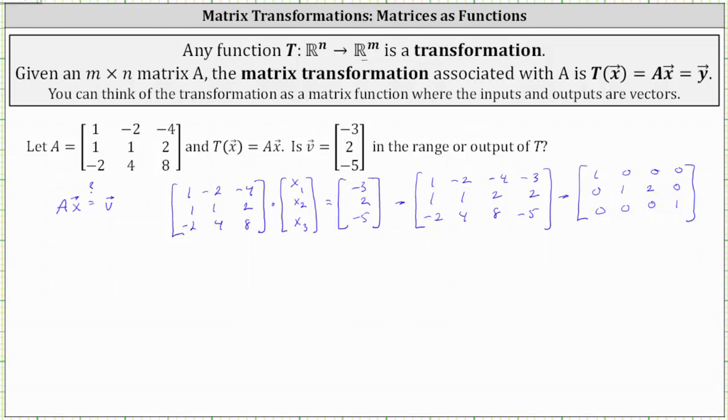Let's go ahead and label the first three columns x sub one through x sub three. Notice we have a problem in row three. Row three indicates that zero equals one, which of course is never true. We have a contradiction, which means there's no solution to the system or no solution to the vector equation, which indicates vector v is not in the range of T.